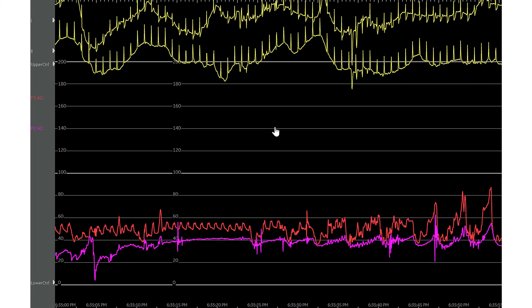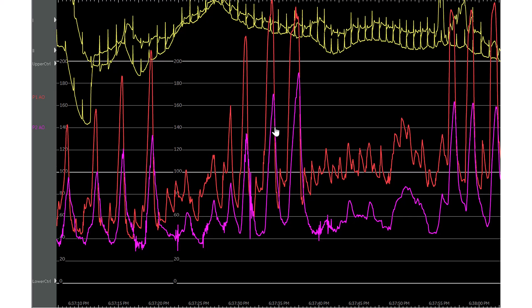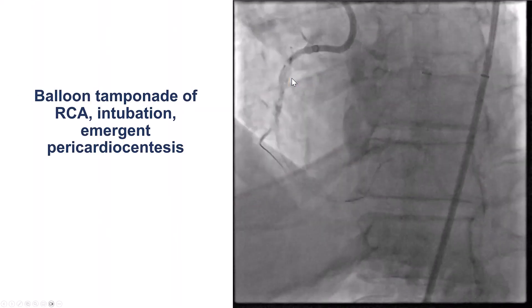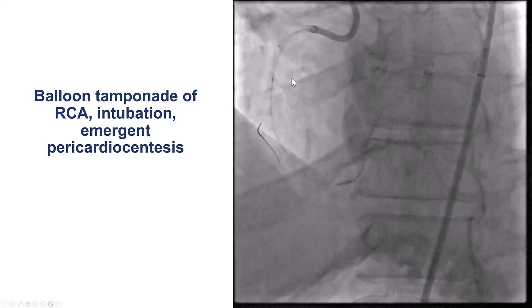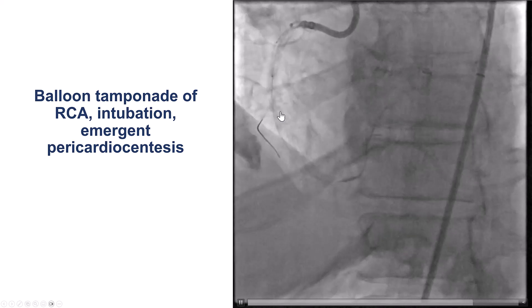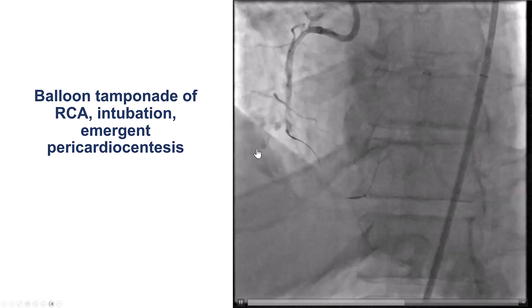CPR was needed transiently, and then we did pericardiocentesis. After we drained the pericardial blood effusion, the blood pressure came nicely back up. The patient was intubated. Before doing anything further, we did put a balloon to minimize the extravasation, which was fairly substantial.